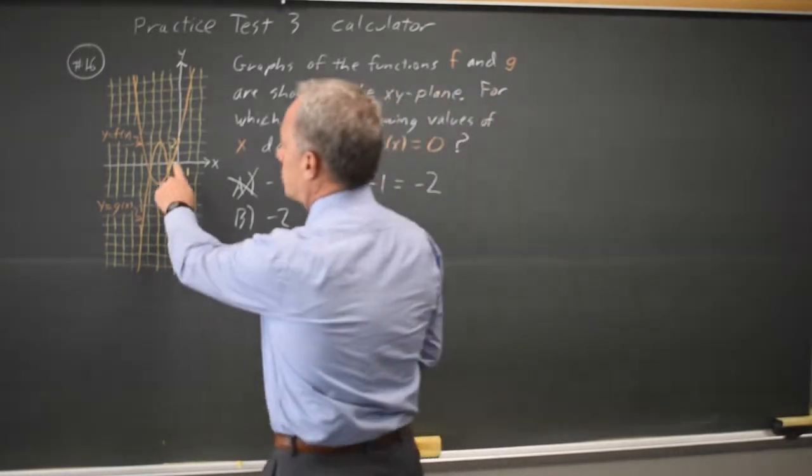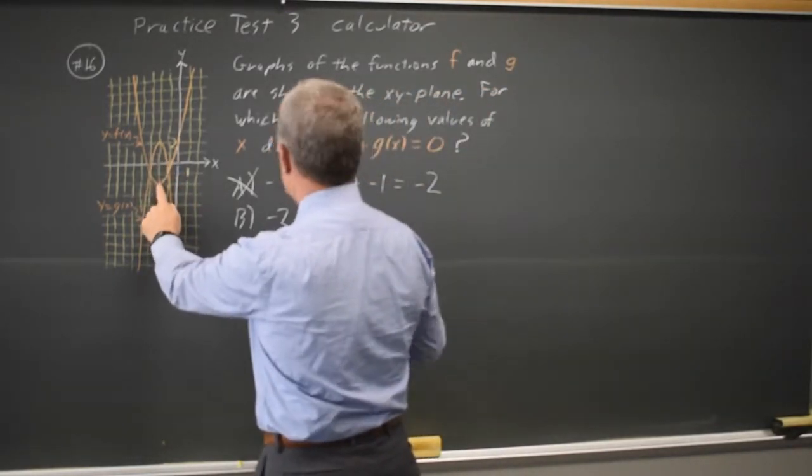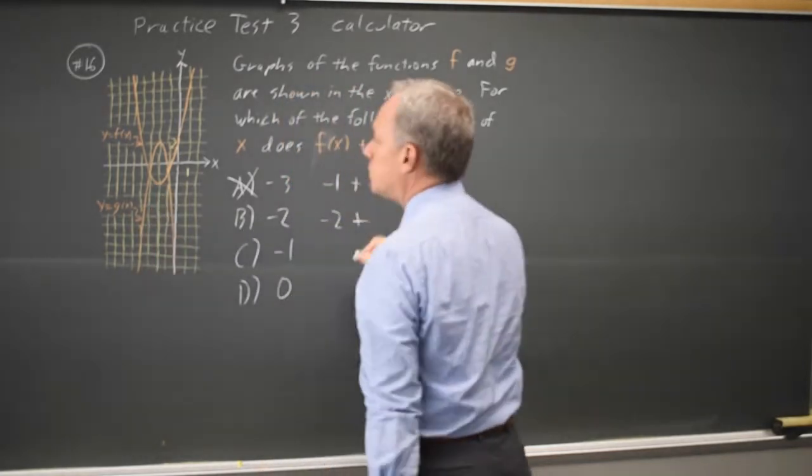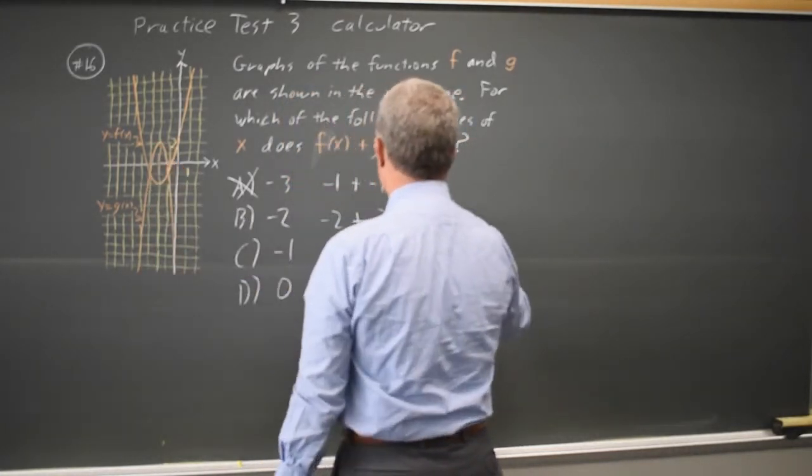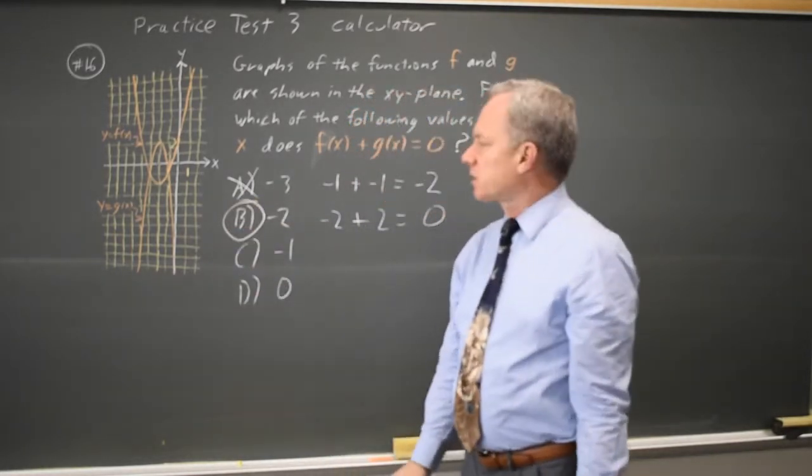How about negative 2? So the y-axis is negative 1, negative 2. f of x is negative 2. g of x is positive 2. And that sum is 0, so B would be the correct answer.